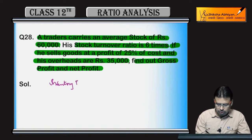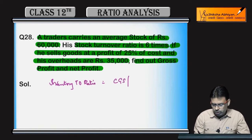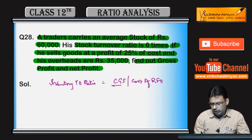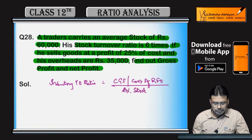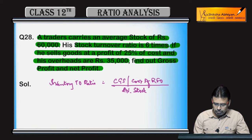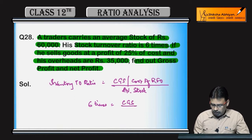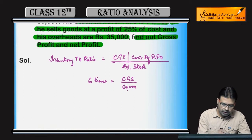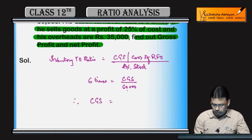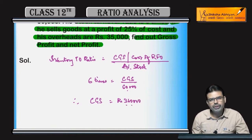The stock turnover ratio formula is: Cost of Goods Sold divided by Average Stock. So the cost of goods sold equals 6 times the average stock of Rs. 60,000, which gives us a cost of goods sold of Rs. 3,60,000.